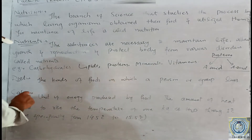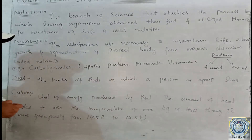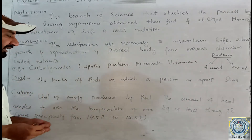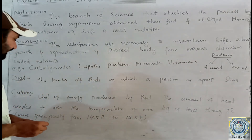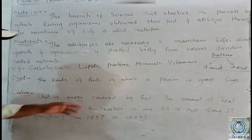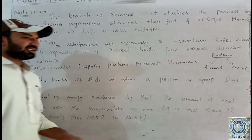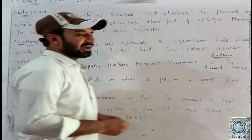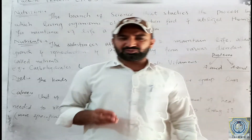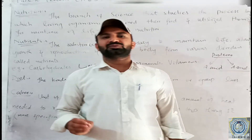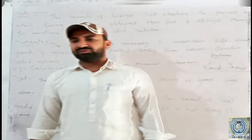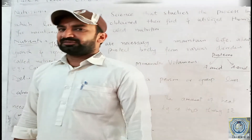What is a calorie? A calorie is the unit of energy. It relates to the amount of carbohydrates, lipids, vitamins, and protein in food that provides energy to the body.